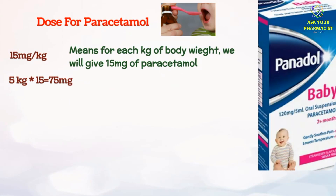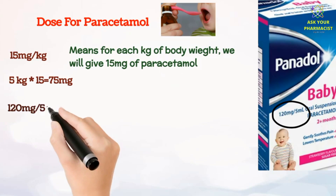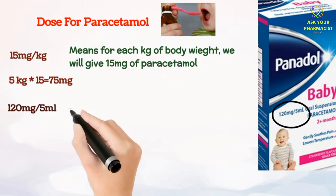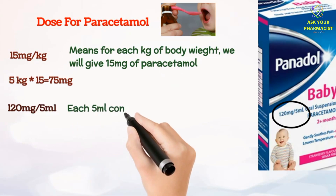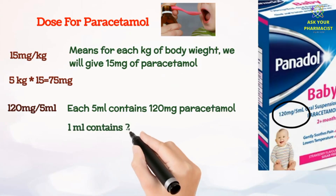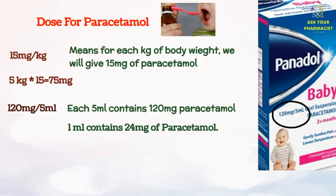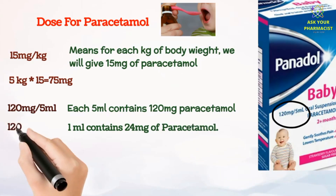Let's take an example using Panadol syrup of strength 120 mg per 5 ml, and see how you will calculate the dose. 120 mg per 5 ml means that each 5 ml of syrup contains 120 mg of paracetamol, which means 1 ml will contain 24 mg of paracetamol — obtained by dividing 120 by 5.